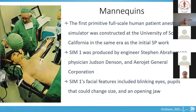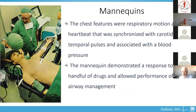The first primitive full-scale human patient anesthesia simulator was constructed at the University of Southern California. Its name was Sim1 and was produced by engineer Stefan Abrahamson, physician Jeff Denson, and Aerojet General Corporation. Sim1's facial features included blinking eyes, pupils that could change size, and an opening jaw. The chest features included respiratory motion and heartbeat synchronized with carotid and temporal pressure pulses, associated with blood pressure. The mannequin demonstrated response to a handful of drugs and the performance of basic airway management.